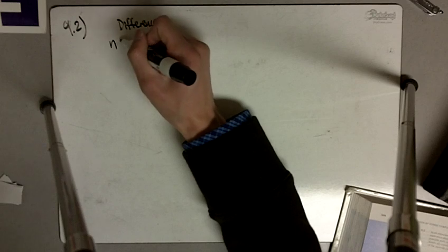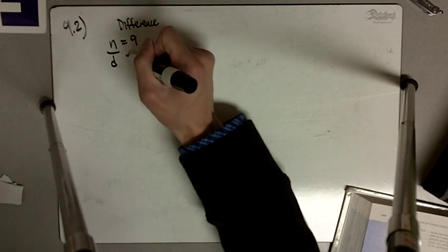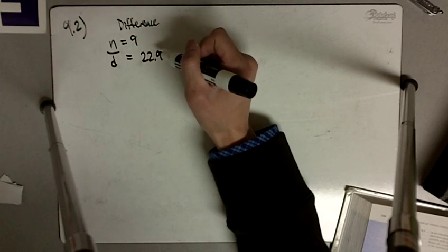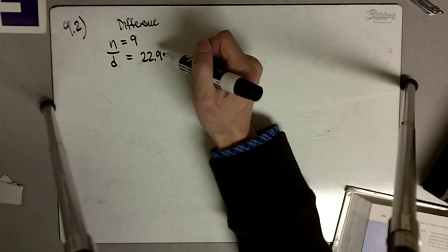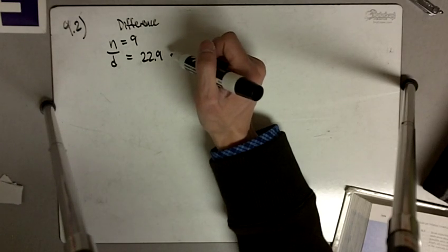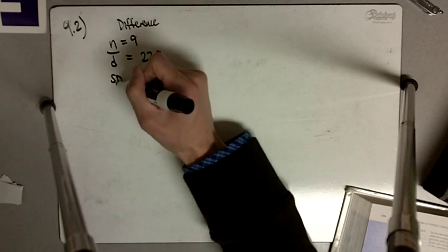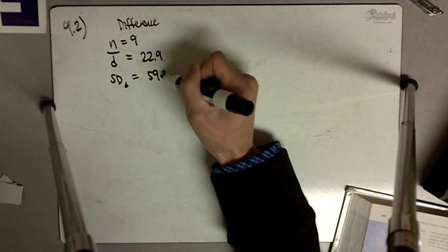And really all we need to know is that n is equal to 9, that the mean difference, so d bar, is equal to 22.9, meaning that those in diet 1 weighed on average 22.9 higher than those in diet 2, and the standard deviation of the difference is 59.3.